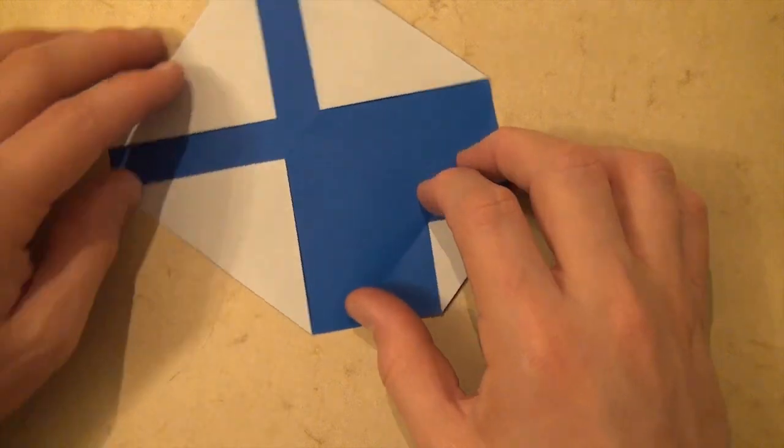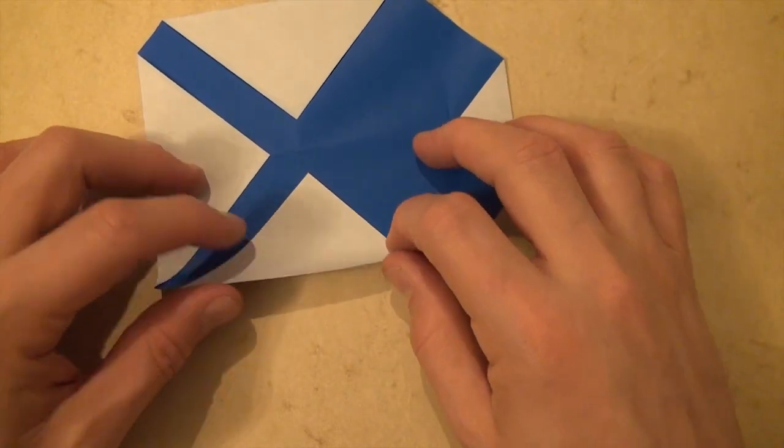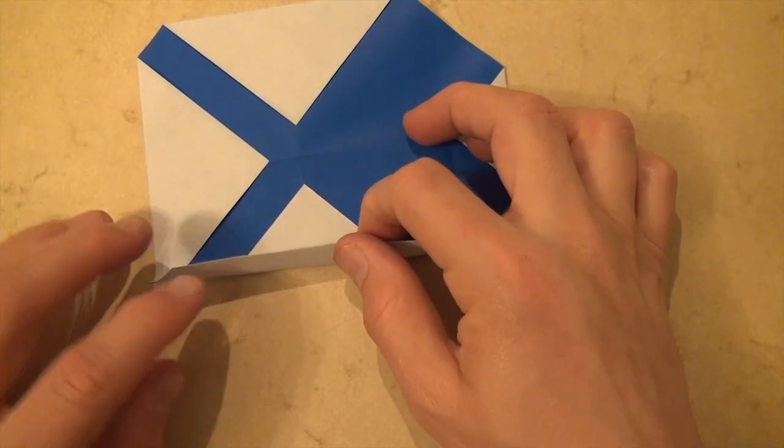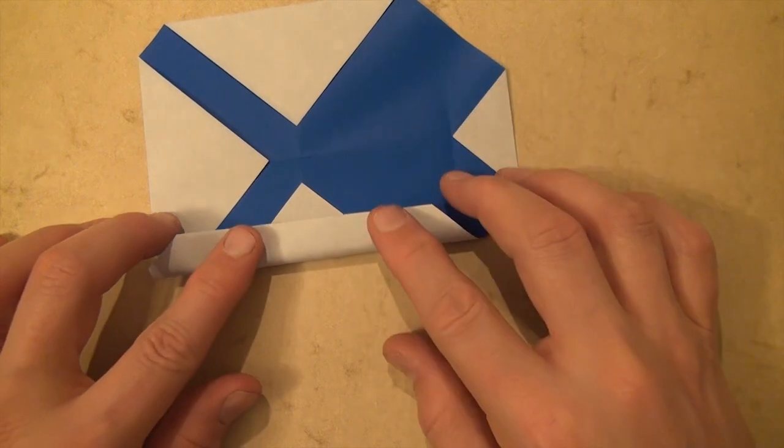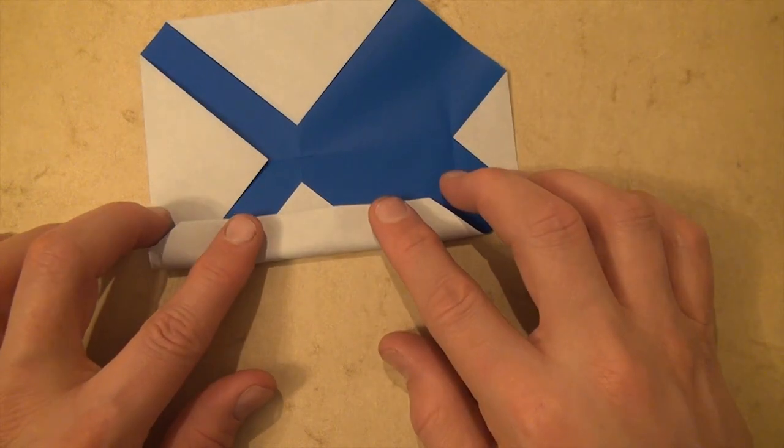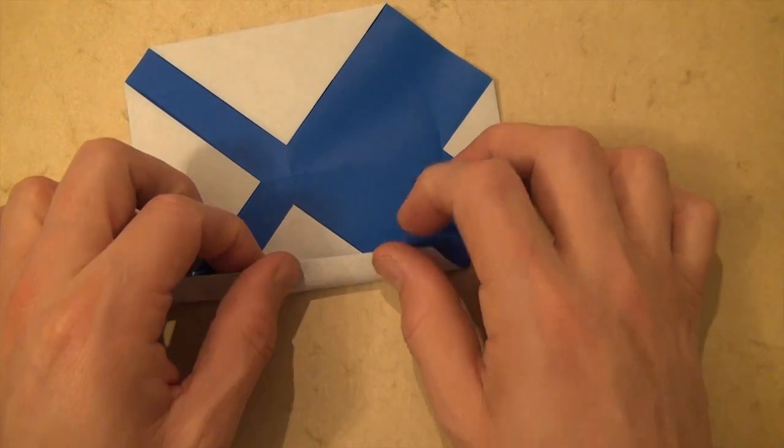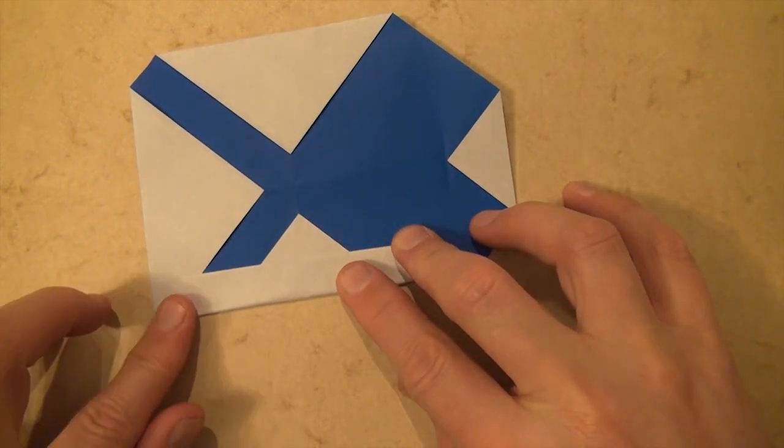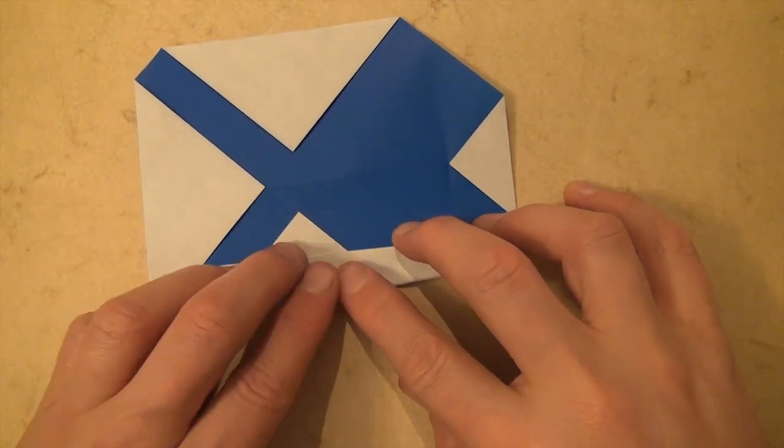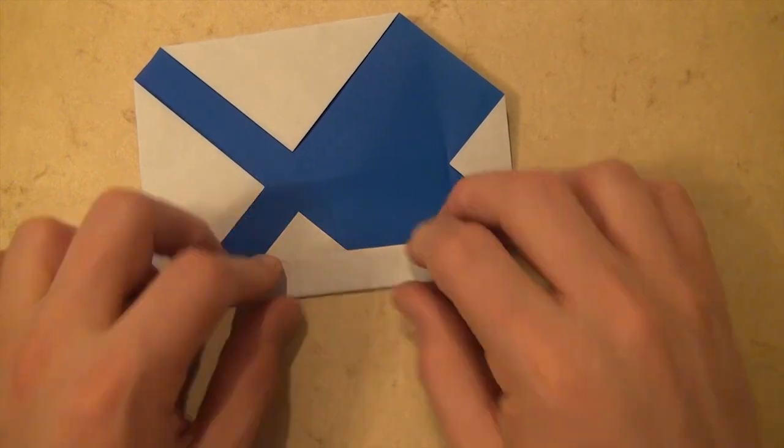And now, let's rotate, and let's fold this edge up. And this, once again, is to taste. If you want a narrower fish, you'll fold up like this. If you want a wider fish, you'll fold about like that.